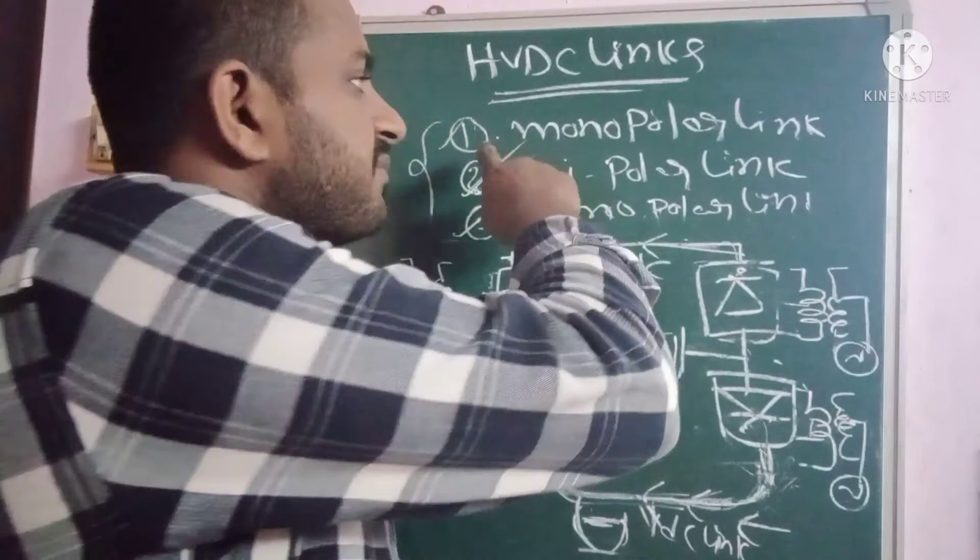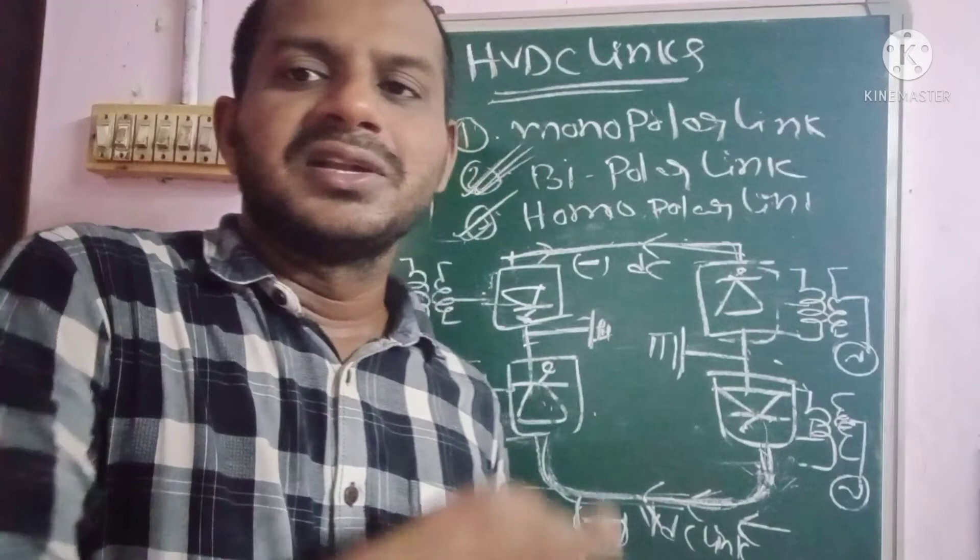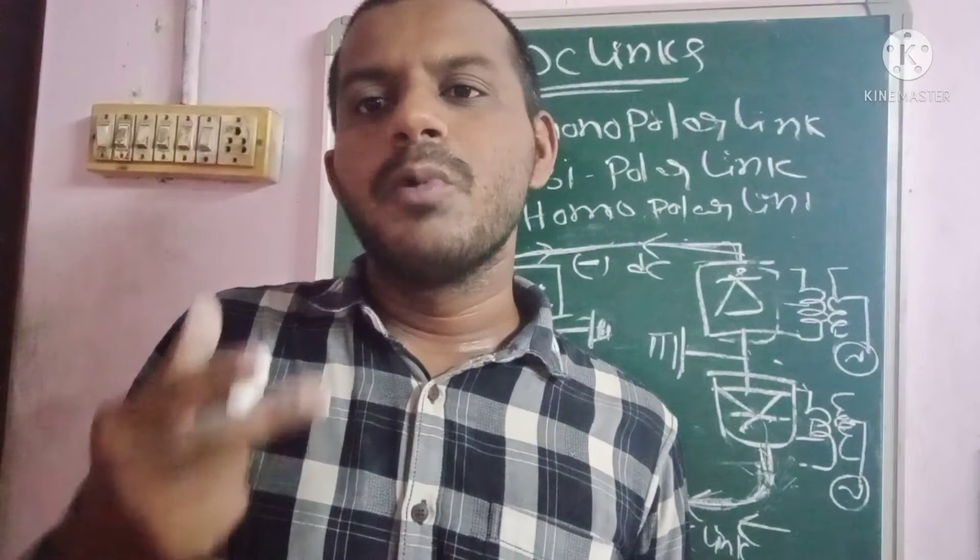This is the total construction and working representation of the three different types of HVDC links: monopolar, bipolar, and homopolar. Please subscribe to our channel for more videos and information on different types of classes. Thank you for your support.